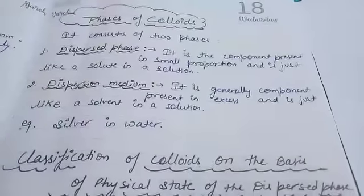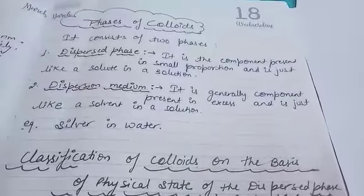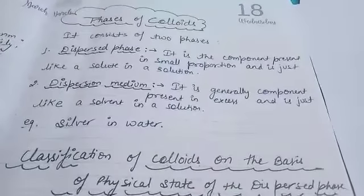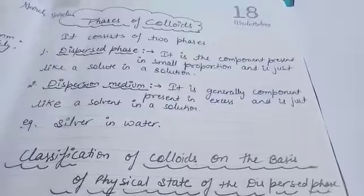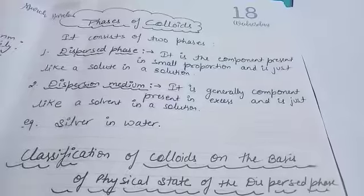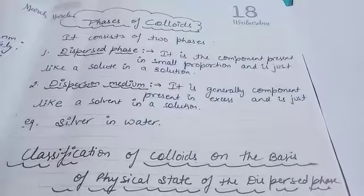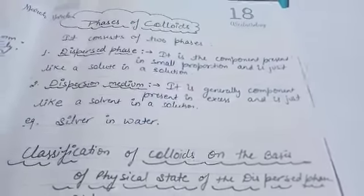In some books it's written hundred also, but actually it's a thousand nanometer. Another one is it cannot be separated by simple filtration. But how it can be separated? It can be separated by ultra filtration or electrophoresis, or we have so many other methods, but that we will study in higher classes, not here.